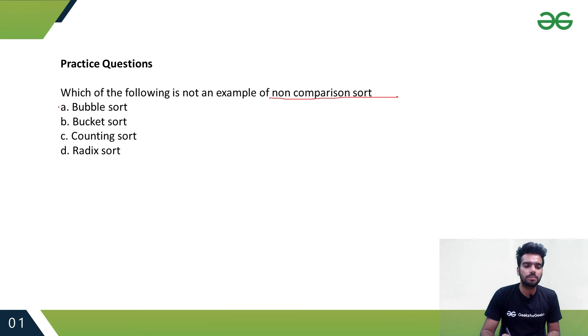If you remember, Bubble Sort is not a non-comparison sort because it does comparisons. It compares values with adjacent values and swaps them, so it's a comparison-based sorting algorithm. Whereas Bucket Sort, Counting Sort, and Radix Sort are all non-comparison based. So option A is the right answer.